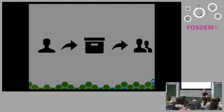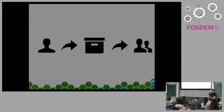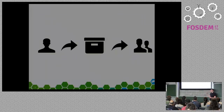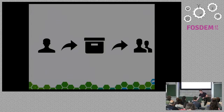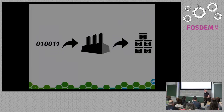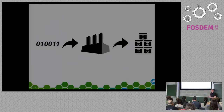You as a software developer shouldn't care about distributing your software to different distributions or different architectures. You should just care about your source code and then push it to the build service and get a new package — for instance for OpenSUSE Leap, Tumbleweed, or Fedora. The build service helps here: you just push your code and your spec files or your package description to the build service and it automatically creates all the specified binaries for you.